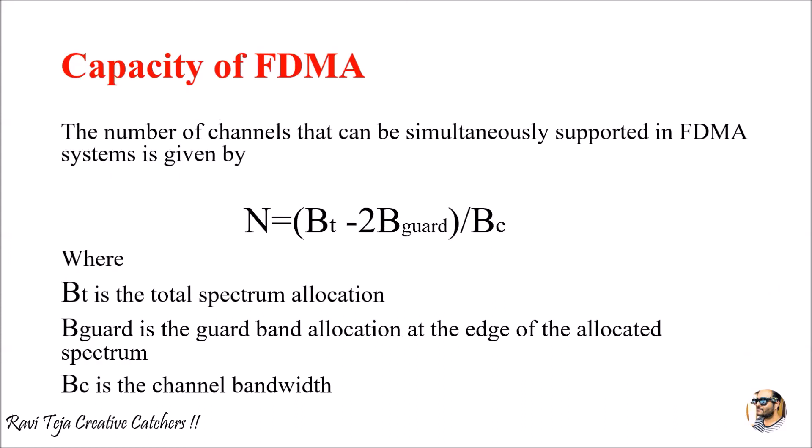A single antenna can serve multiple channels or users in FDMA. The capacity — how many channels can be simultaneously supported — is given by N = (B_T − 2·B_guard) / B_C, where B_T is the total spectrum allocation, B_guard is the guard band allocation at the edge of the allocated spectrum, and B_C is the channel bandwidth. Thank you.